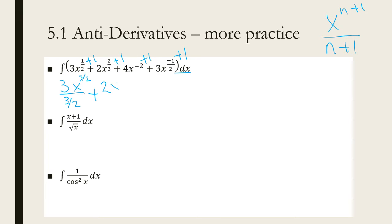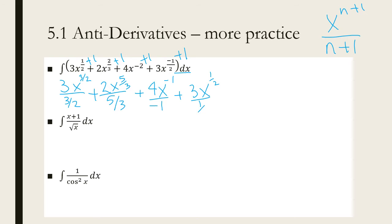I'm going to take care of each term and then fix it after. The next one will be 2x to the 5/3 over 5/3. The next one will be plus 4x to the negative 1 over negative 1. We're going to add plus C at the end, but we'll wait until we simplify everything first.